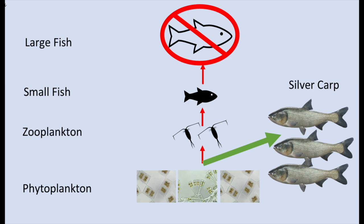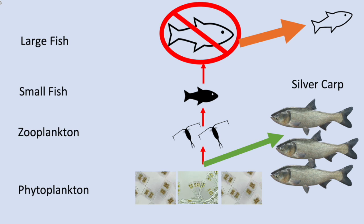Fast forward a few years: silver carp have had a chance to spawn multiple times, and their populations have tripled. More carp means more mouths to feed, and the majority of phytoplankton will go to silver carp. Zooplankton are being outcompeted and their populations have been reduced, which also means there are fewer zooplankton for smaller fish to predate on. Smaller fish being limited likewise reduces the amount of large fish. Overall, if this occurs, large fish will ultimately die off or move out of the area in search of other prey.